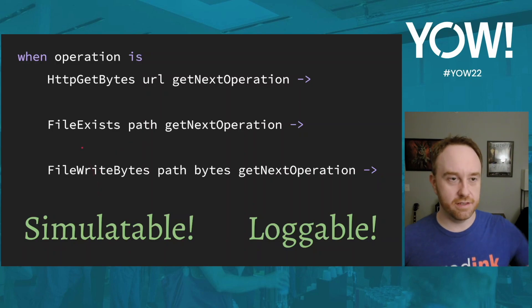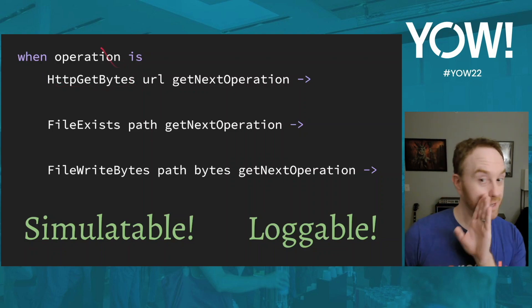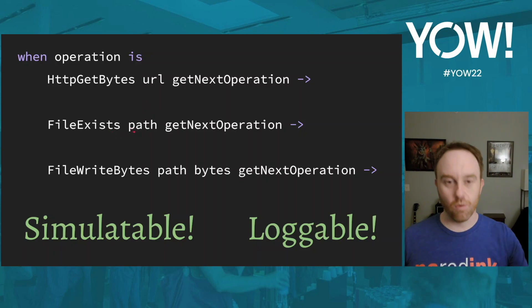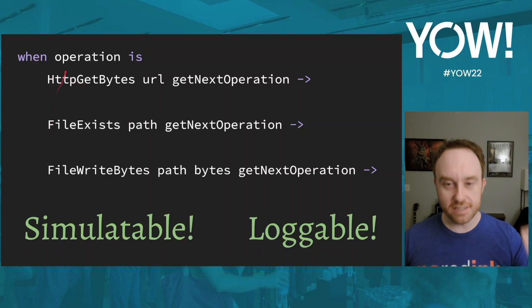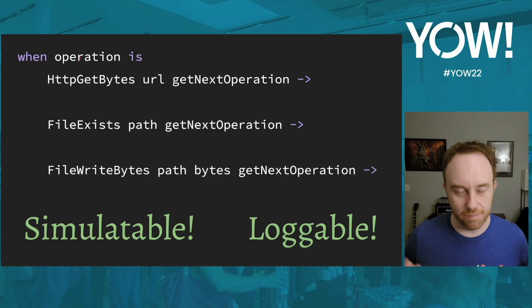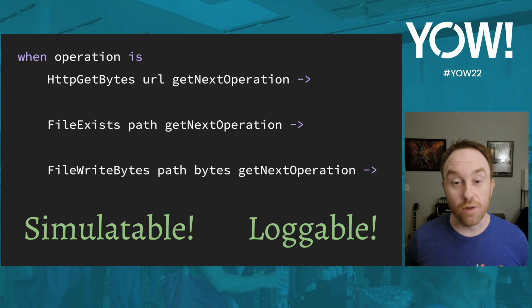This representation is also loggable. As you traverse the data structure, you can not only perform the requested operation but also log it — recording that an HttpGetBytes or FileExists occurred. With exhaustiveness checking, you can guarantee that every possible operation in the system includes logging. During simulation tests, you can also choose to ignore logging entirely — that's easily done too.